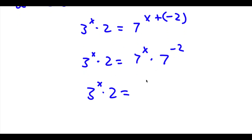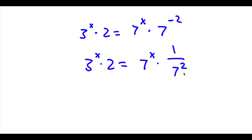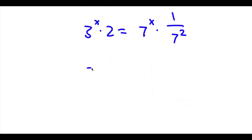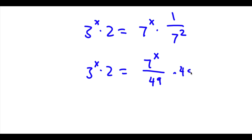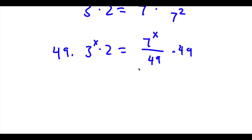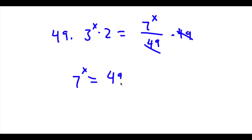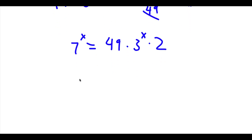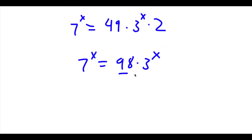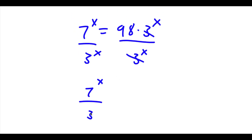Now 7 to the power of negative 2 is the same thing as 1 over 7 to the power of 2, and 7 to the power of 2 is 49, so now I have 7 to the power of x over 49. Now I can multiply both sides by 49, so these cancel out and I'll be left with 7 to the power of x is equal to 49 times 3 to the power of x times 2. Now 49 times 2 is 98, so now I have 7 to the power of x is equal to 98 times 3 to the power of x. Now I can divide both sides by 3 to the power of x, and I'll be left with 7 to the power of x over 3 to the power of x is equal to 98.